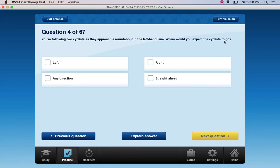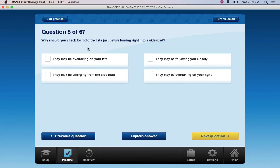You're following two cyclists as they approach a roundabout in the left-hand lane. Where would you expect the cyclists to go? Left, right, any direction, or straight ahead.